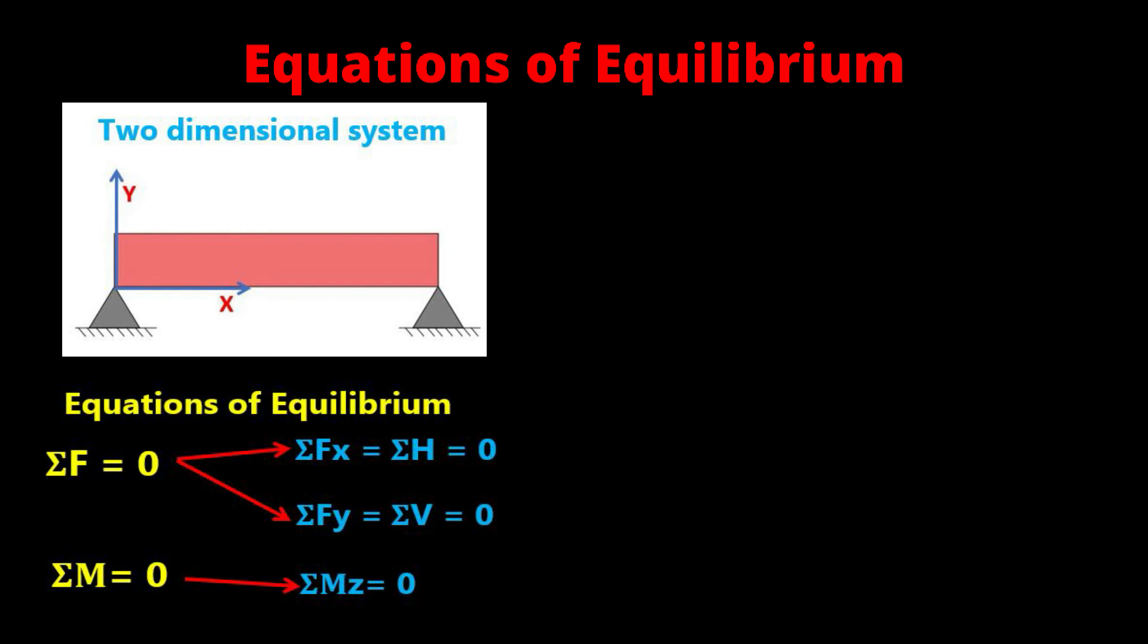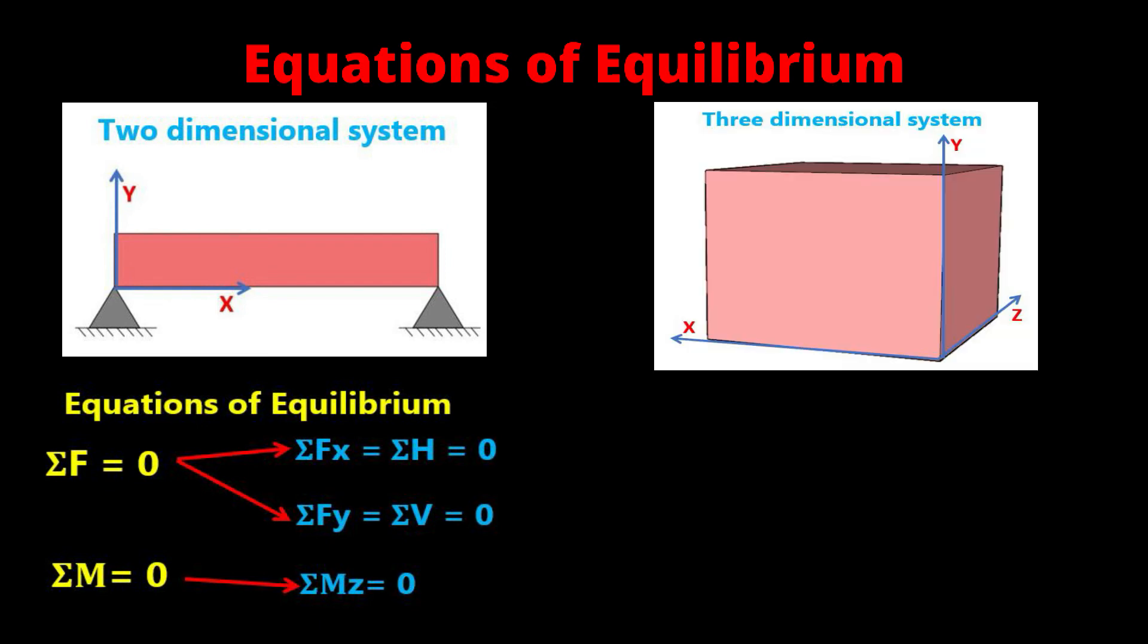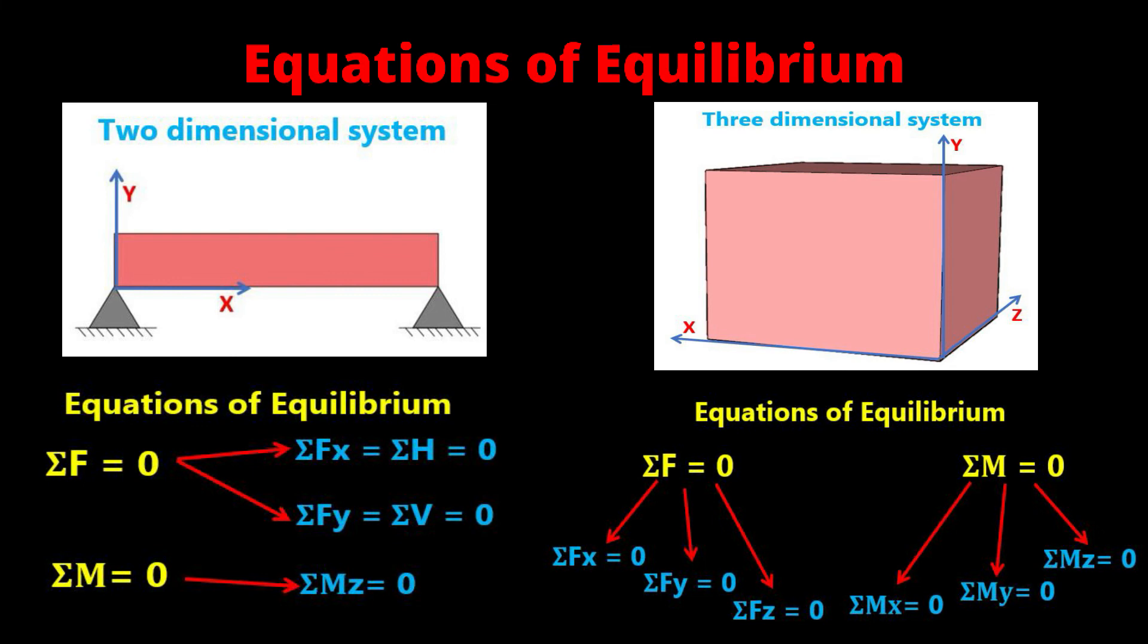And if we see three-dimensional system, it has x, y, and z axis, then equations of equilibrium are: the sum of the forces in x direction, y direction, and z direction equals zero, and also we will get moment in all three directions, that is x, y, and z direction equals zero. These are the equilibrium equations in 2D and 3D systems.